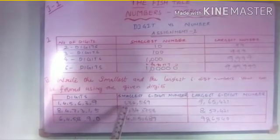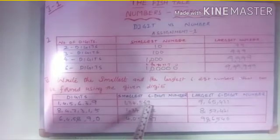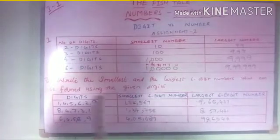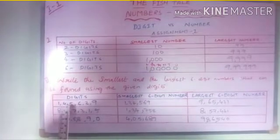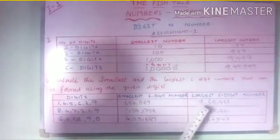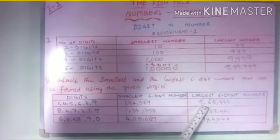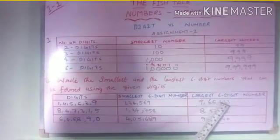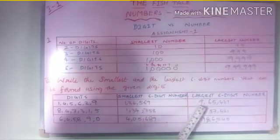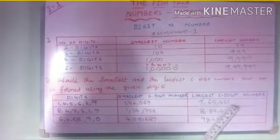So the smallest 6-digit number becomes 1,34,569. To write the largest 6-digit number, the largest digit should be written first — that is 9 in the lakhs place — then 6, then 5, 4, 3, and 1. So it is 9,65,431.